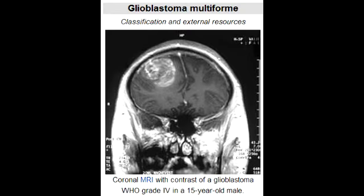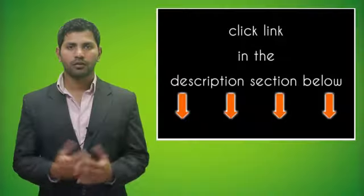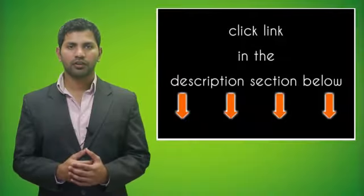Describe the pathogenesis of glioblastoma multiforme. The pathogenesis is characterized by the presence of a small area of necrotizing tissue surrounded by anaplastic cells. There are pseudopalisading pleomorphic tumor cells with areas of necrosis and hemorrhage.